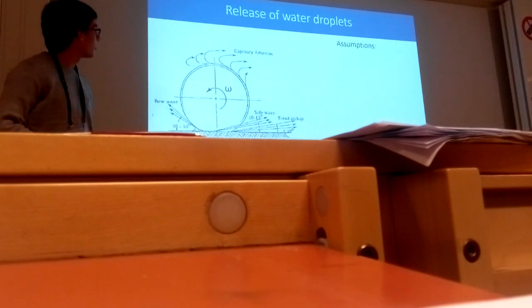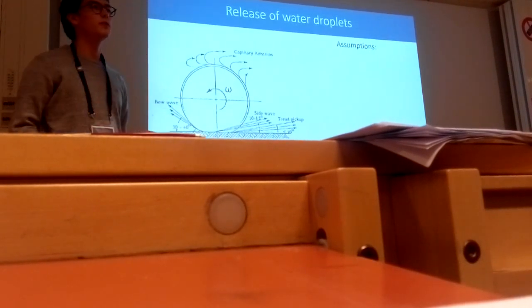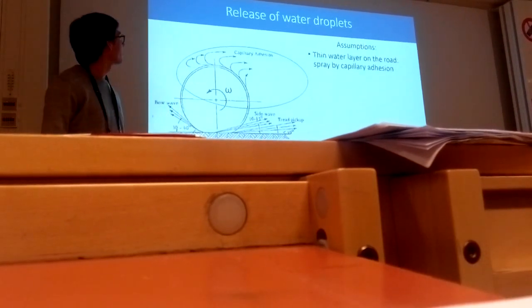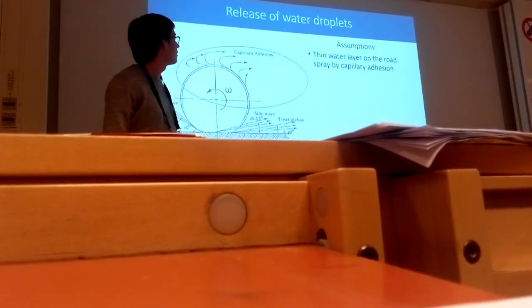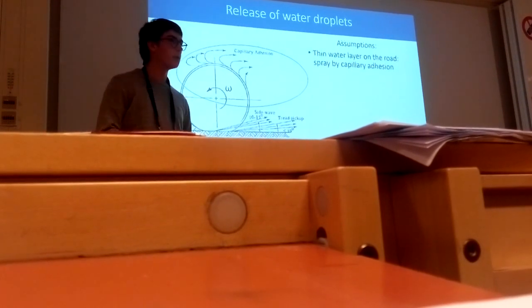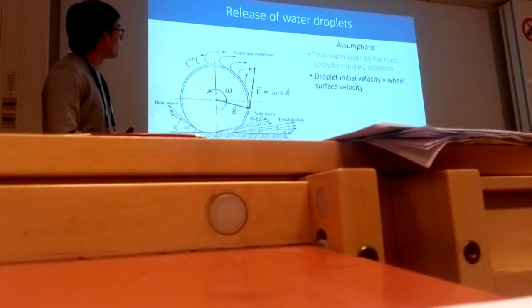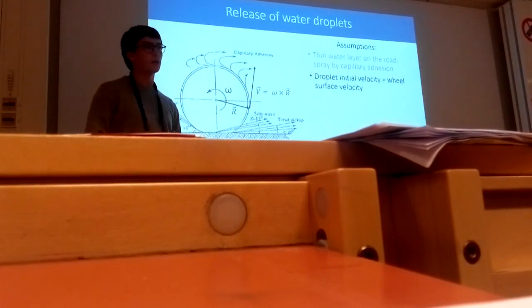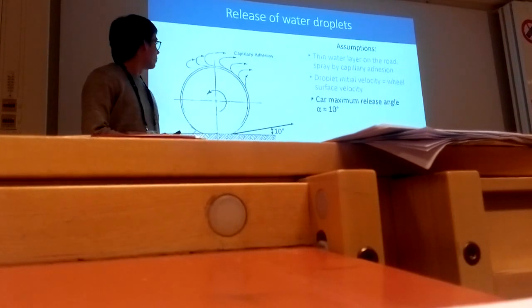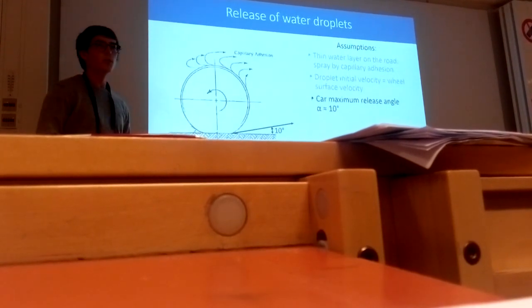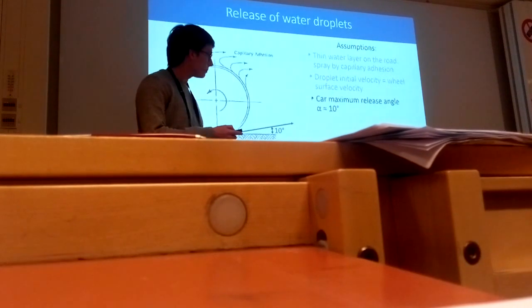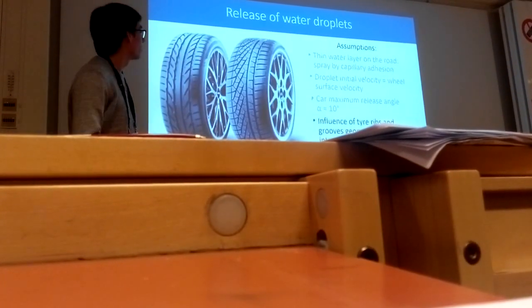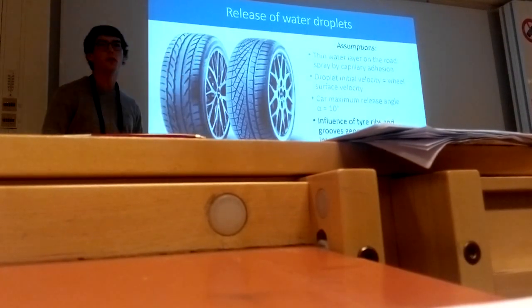The release of water droplets is mostly created by capillary adhesion, as we assume there is only a thin layer of water on the road. We also consider that the droplet initial velocity is always equal to the wheel surface velocity when the droplet is released. We assume that for a car the maximum release angle is approximately 10 degrees, and we neglect the influence of the tire ribs and the tread geometries.